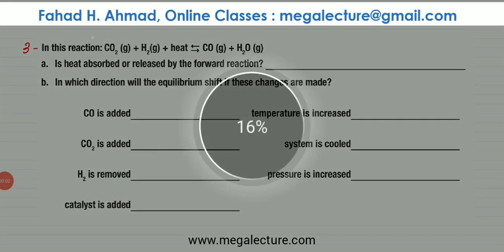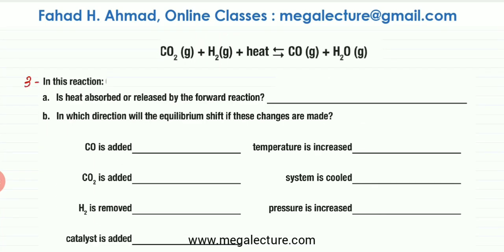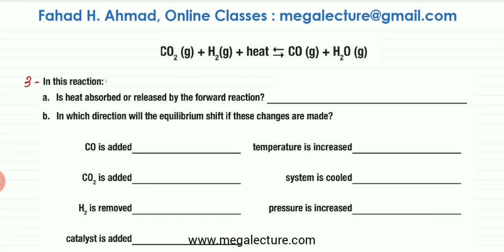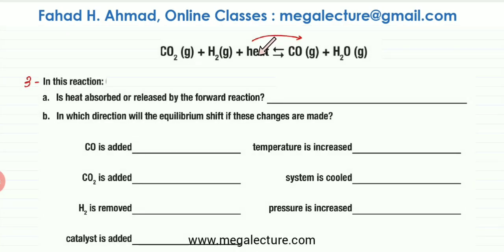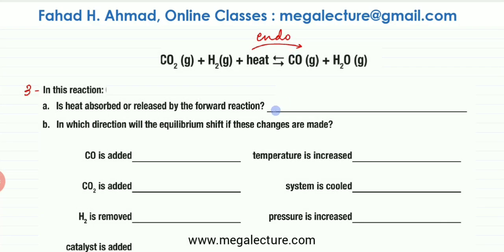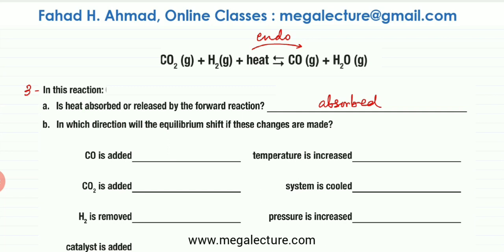Now let's solve question number three. The reaction is CO2 + H2 + heat ⇌ CO gas + H2O gas. The question asks: is heat absorbed or released by the forward reaction? You'll notice that heat is being gained by CO2 and H2, which means the reaction is endothermic in the forward direction. So heat is absorbed and the forward reaction is endothermic; the reverse reaction is exothermic.